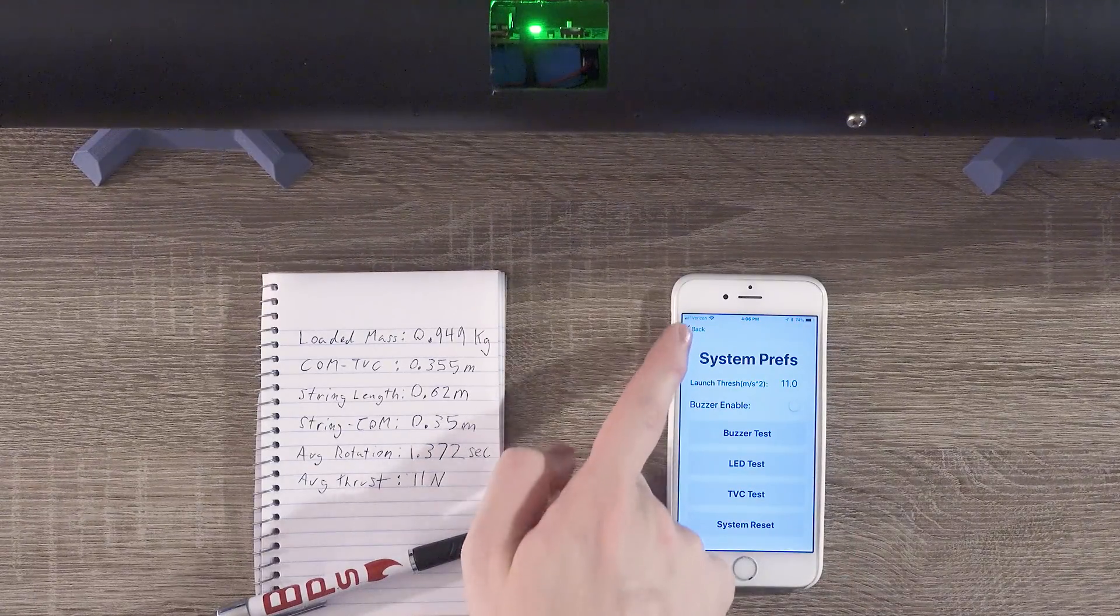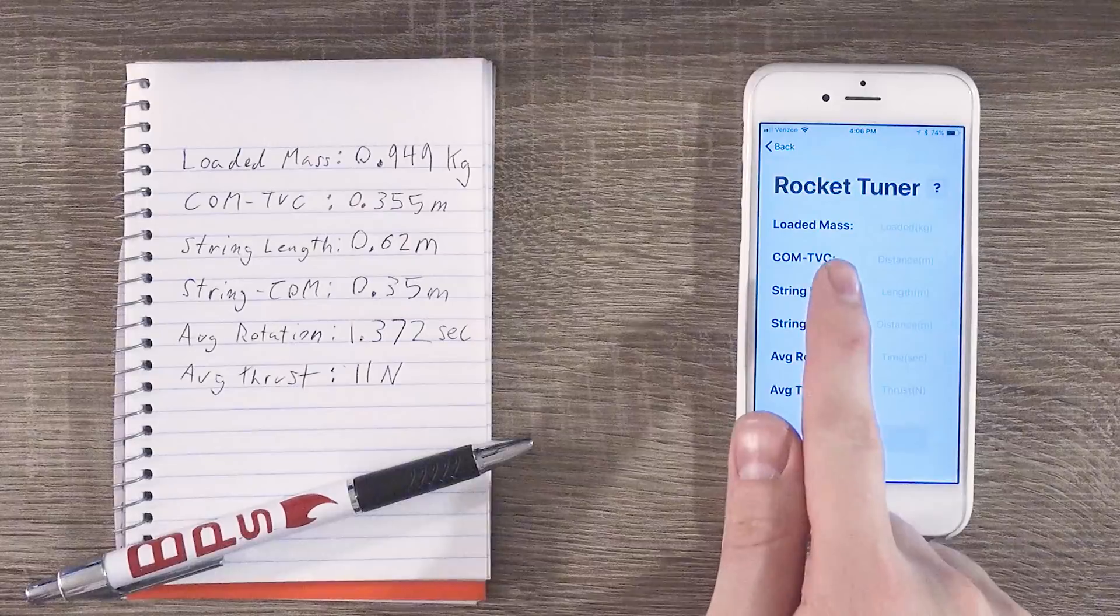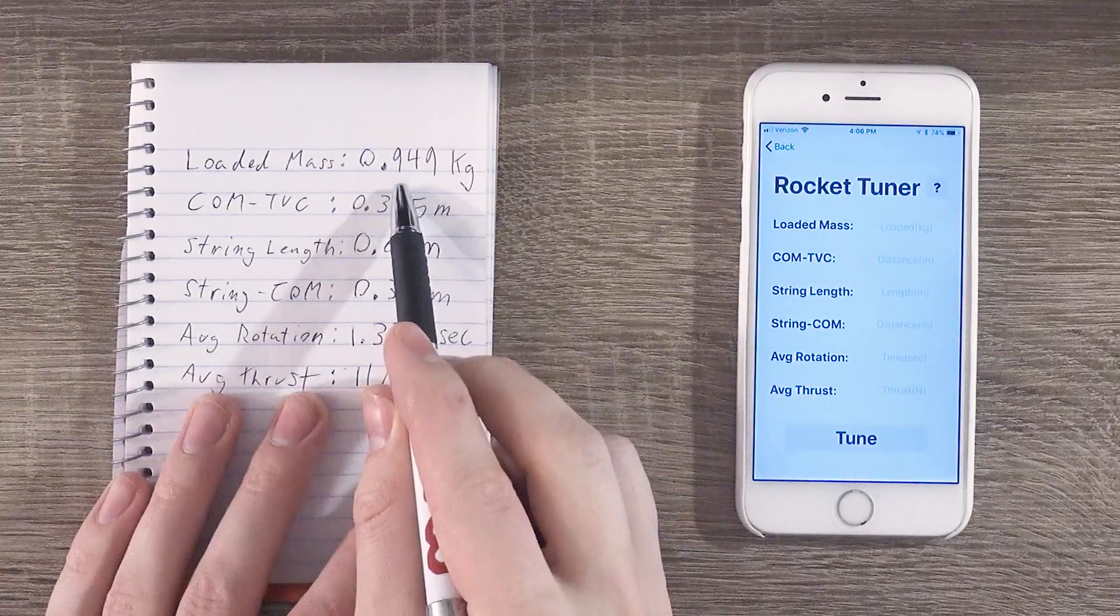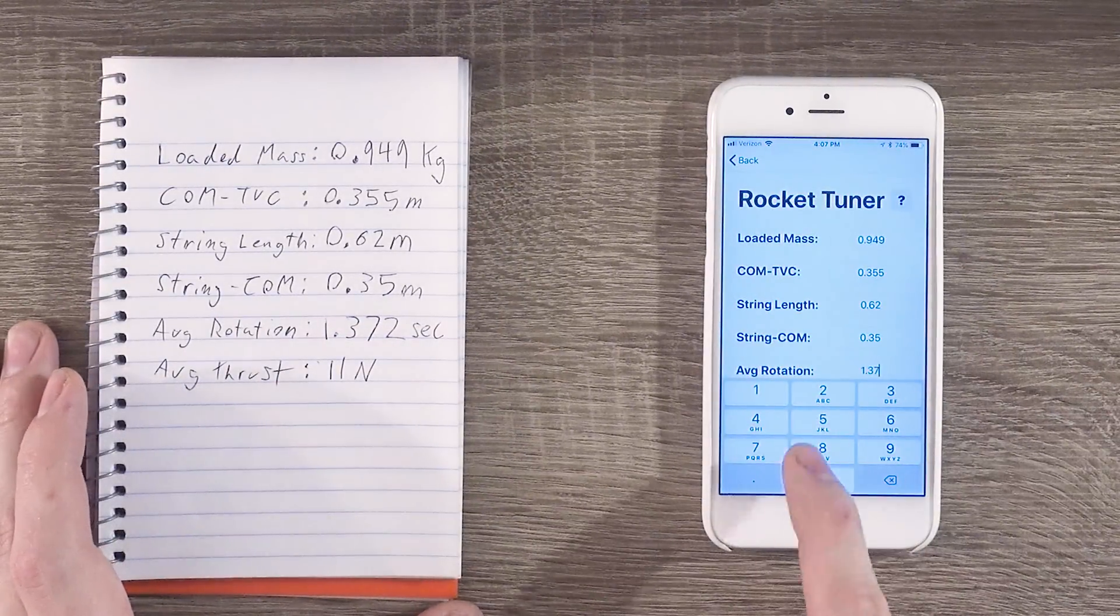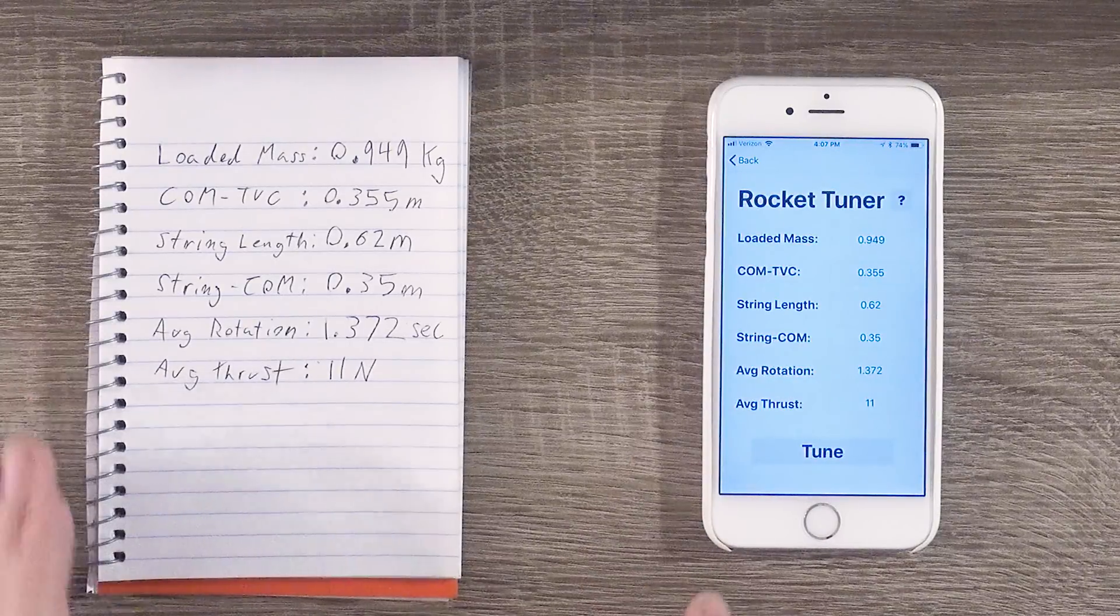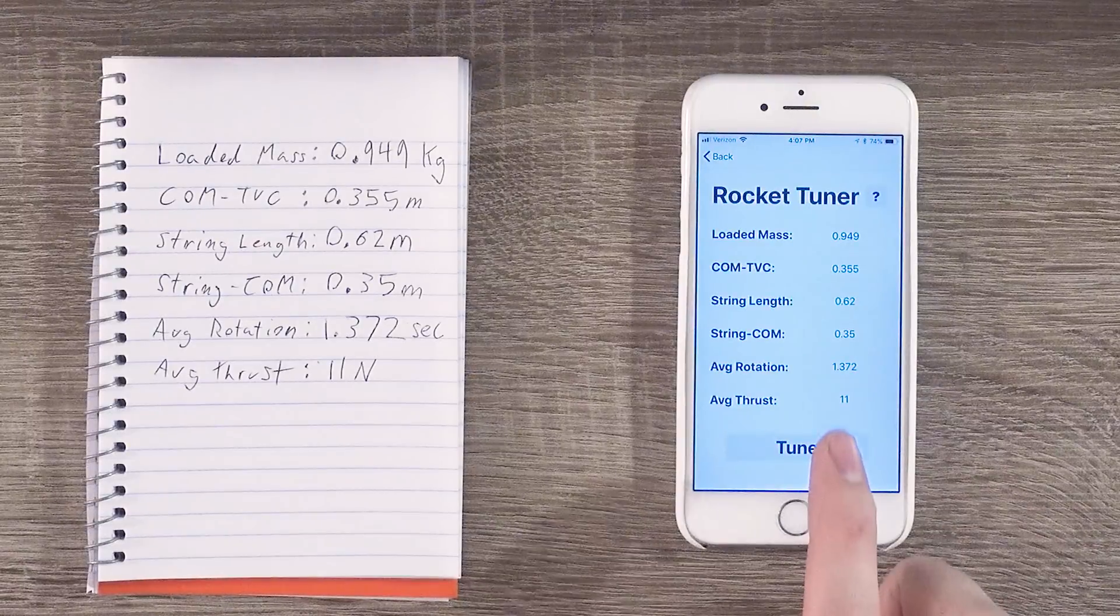Now back out of that and go into the tuning section. Now we're going to take all of the data that we wrote down in the notebook and transfer it to the tuning app. Make sure your units and decimal places are all correct for this. Just before you hit the tune button, I usually take a screenshot just in case I want to reference these numbers later. Then, when you're ready, hit the tune button.